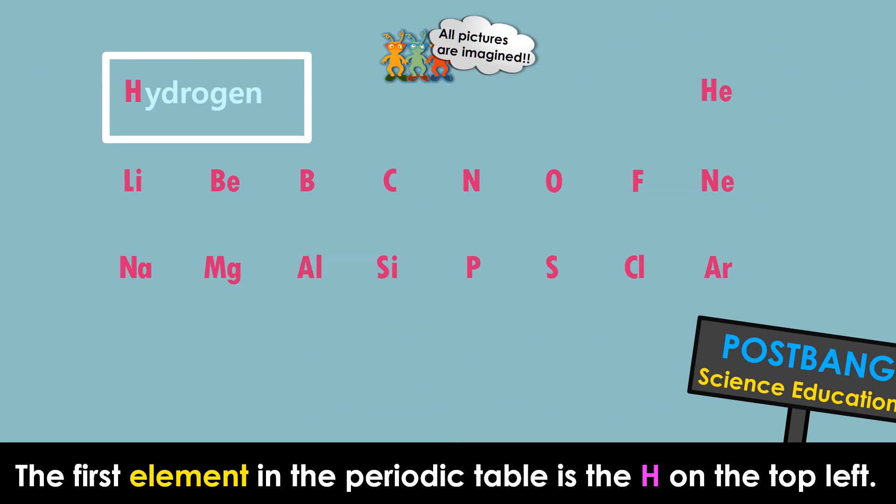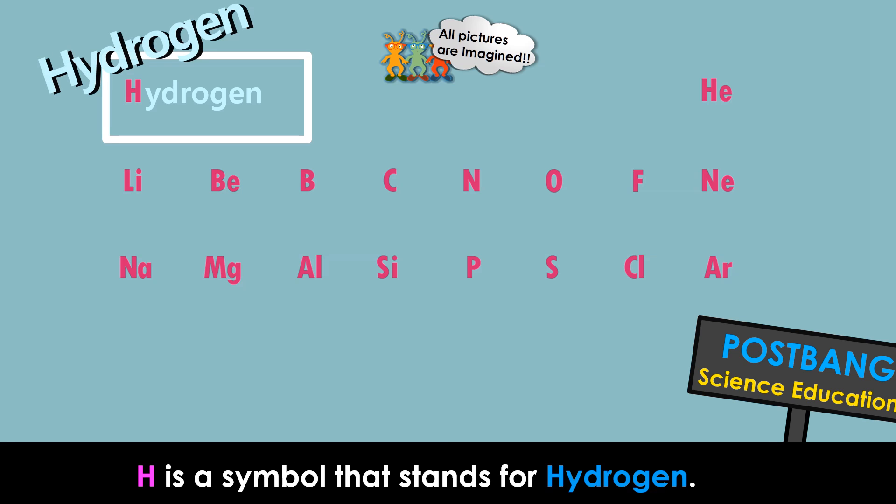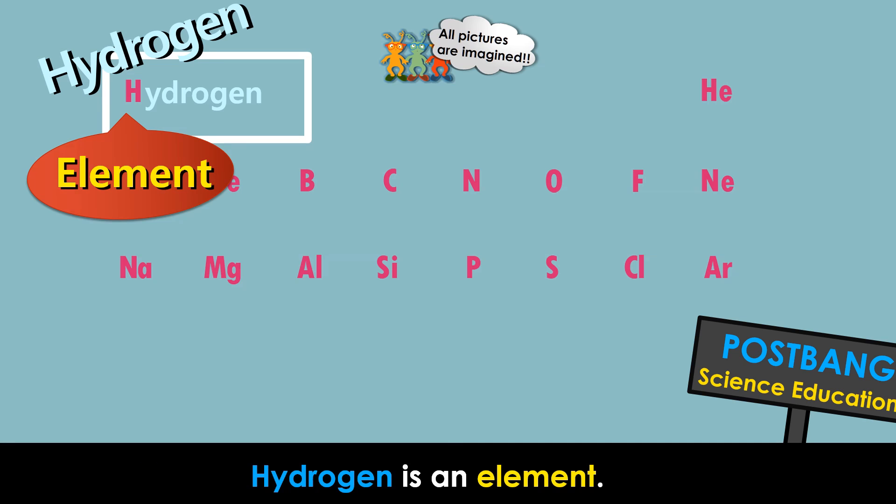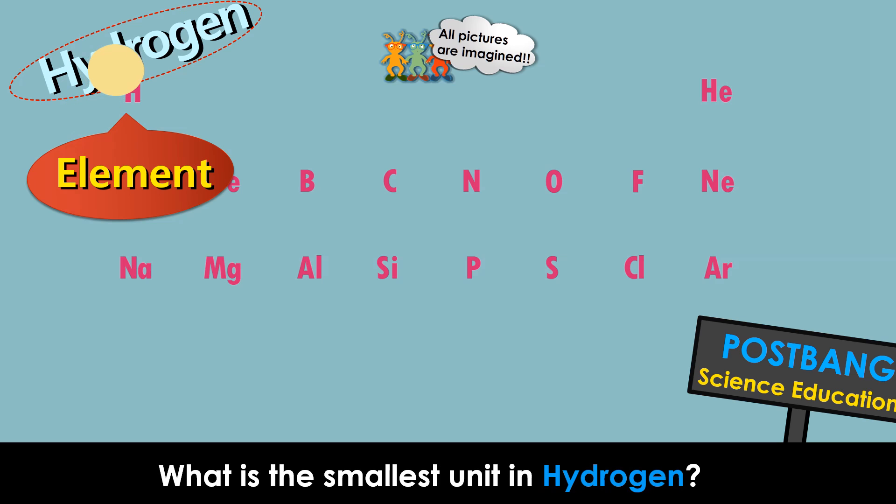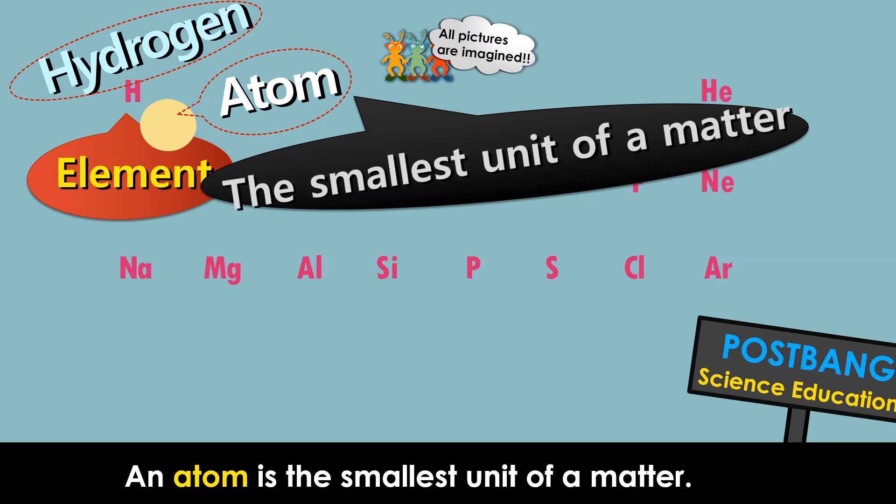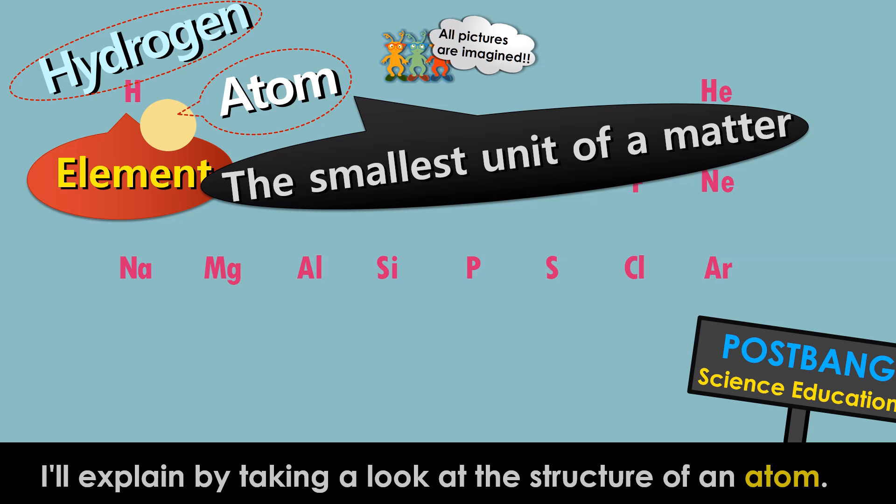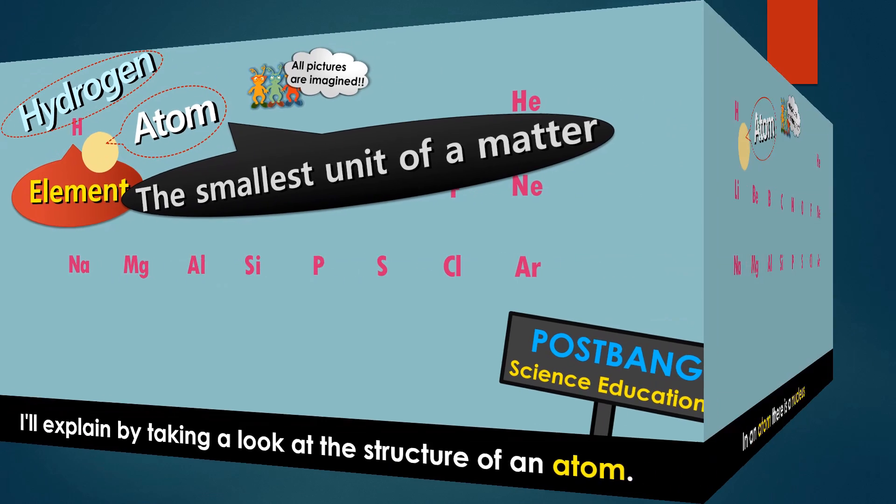The first element in the periodic table is the H on the top left. H is a symbol that stands for hydrogen. Hydrogen is an element. What is the smallest unit in hydrogen? An atom is the smallest unit of matter. I'll explain by taking a look at the structure of an atom.